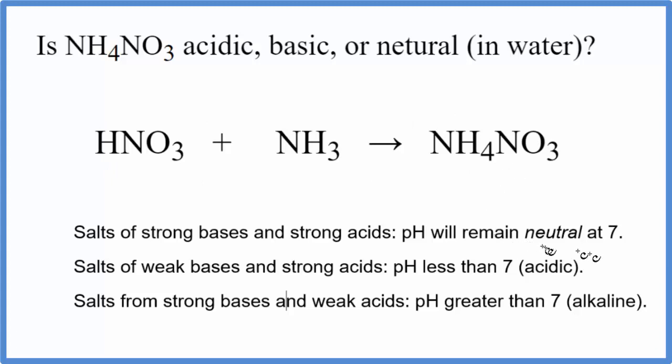So we know the equation, now we have these rules that we can use to figure out whether NH4NO3 is acidic, basic, or neutral. To use the rules, we need to know the strength of the acid and the base.